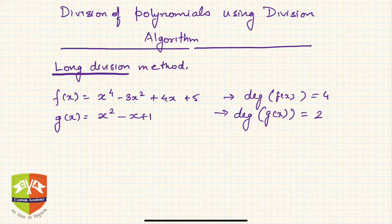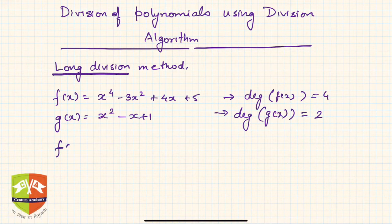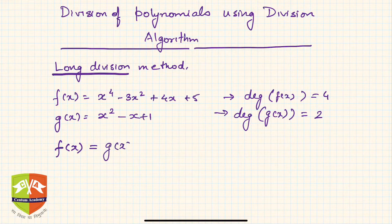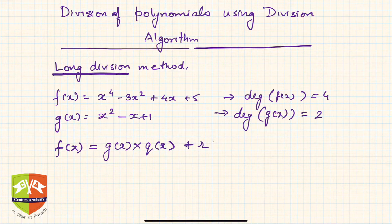The degree of g(x) is clearly 2. By the division algorithm, I can say I must find q(x) and r(x) such that f(x) = g(x) × q(x) + r(x), where q(x) is the quotient polynomial and r(x) is the remainder polynomial.